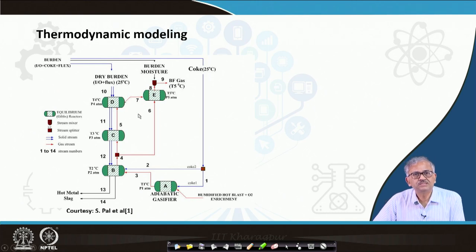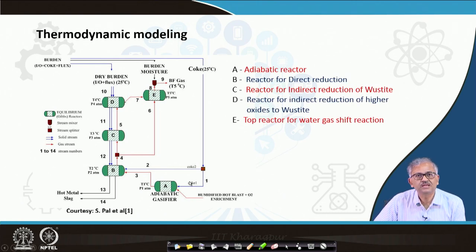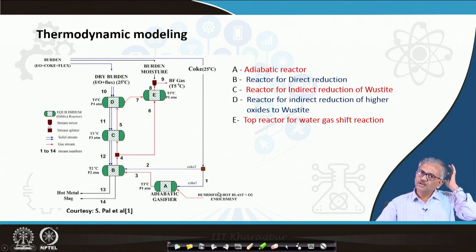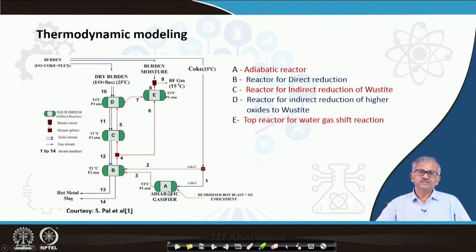Let us discuss this. You can see we have reactor A, which is basically an adiabatic reactor — you can model the tuyere zone like this. What you are doing here is: all the coke that is coming goes through a splitter. A part of the coke goes into this adiabatic reactor and a part goes directly to reactor B, which is the reactor for direct reduction. This coke will be burned in reactor A generating heat.